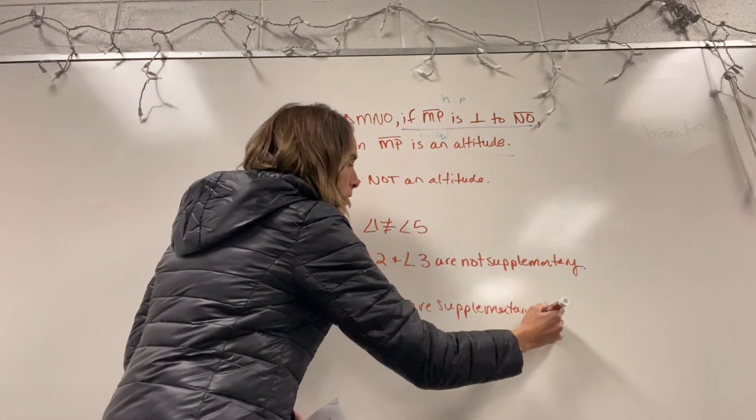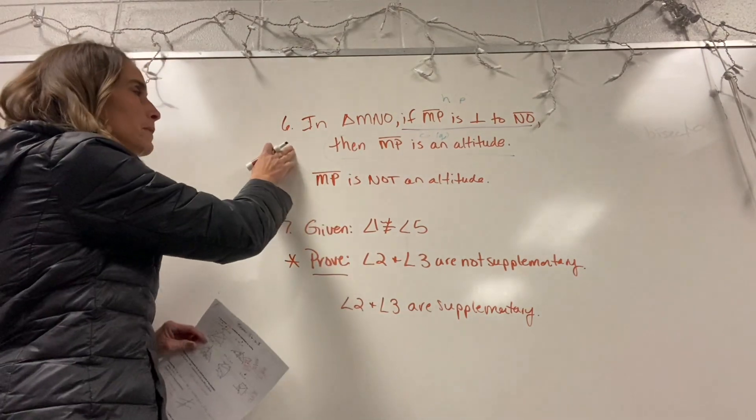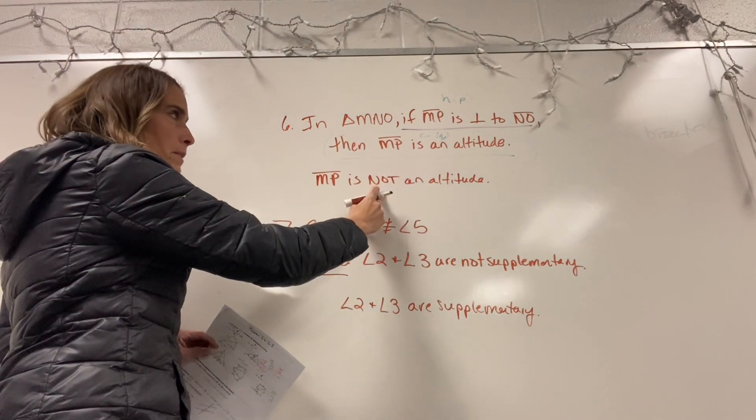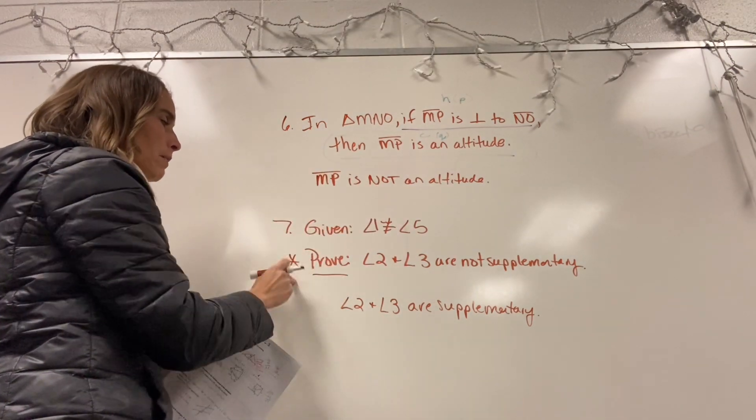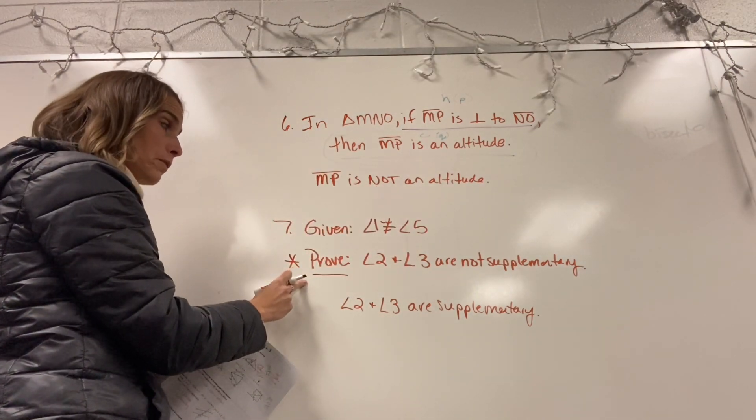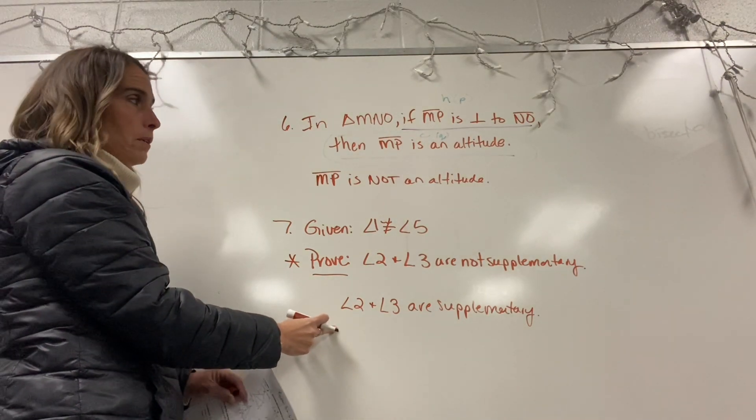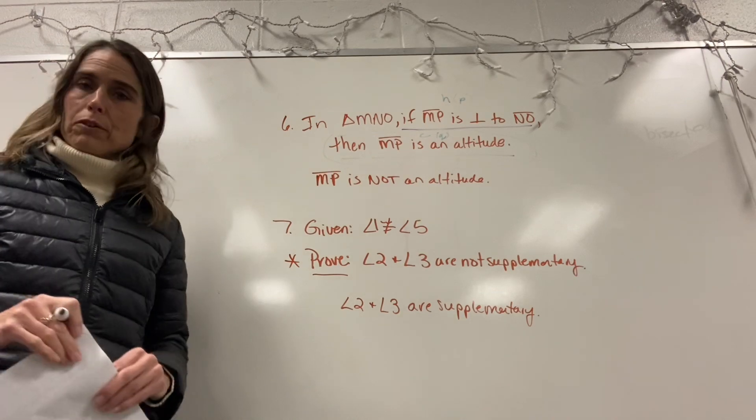All right, so those are the two ways. One, if it's set up as an if-then statement, you're going to take the conclusion part, the then part, and you're going to write the opposite of that. If it's set up as given and prove, you take your prove and you write the opposite of that. And in both situations, that's what your first statement of an indirect proof would be.